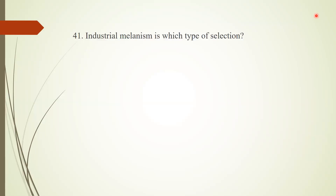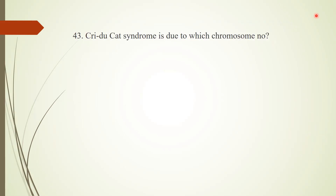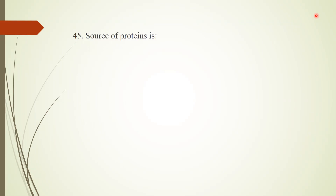Question 41: Industrial melanism is which type of selection? Answer: directional selection. Question 42: The part of bacteria having antibiotic-resistant genes is the plasmid — plasmids also work as vectors and carry antibiotic or metal-resistant genes. Question 43: Cri-du-chat syndrome is due to which chromosome number? Answer: absence of a piece of the short arm of chromosome number five.